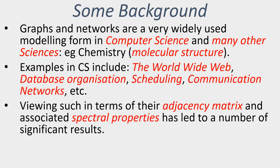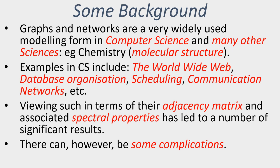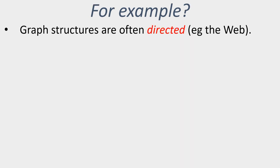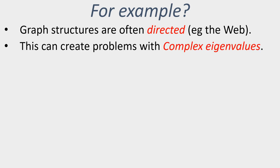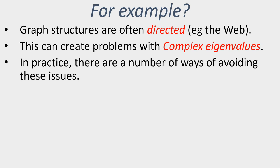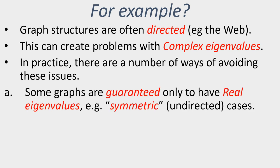If we look at those graph structures in terms of their adjacency matrices and the spectral properties of the matrices involved, then we have a number of significant results that are developed. There can be some complications that arise. For example, graph structures—if you think of the world wide web—these are typically very often directed graphs rather than undirected graphs, and that can lead to problems with the presence of complex number eigenvalues.